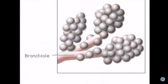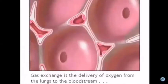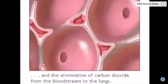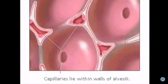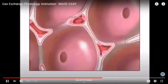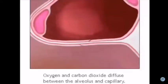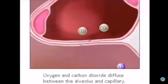The smallest bronchioles end in tiny air sacs called alveoli, which inflate during inhalation and deflate during exhalation. Gas exchange is the delivery of oxygen from the lungs to the bloodstream and the elimination of carbon dioxide from the bloodstream to the lungs. It occurs in the lungs between the alveoli and a network of tiny blood vessels called capillaries, located in the walls of the alveoli. The walls of the alveoli share a membrane with the capillaries, making it possible for oxygen and carbon dioxide to diffuse freely between the respiratory system and the bloodstream.